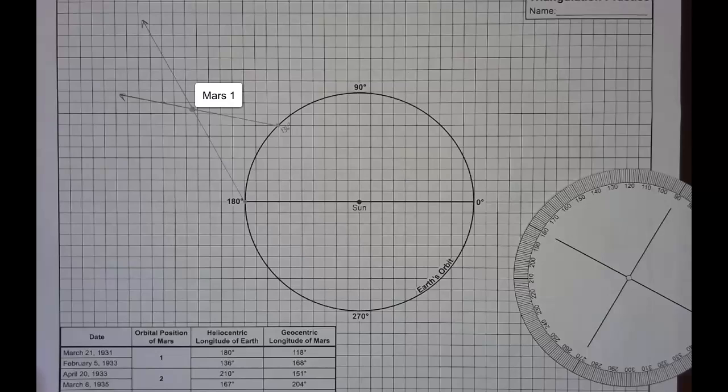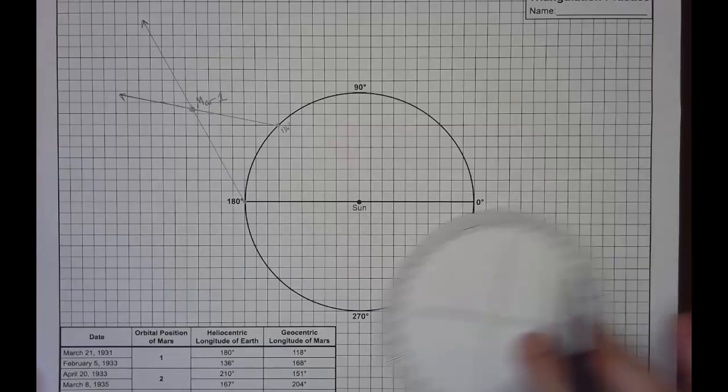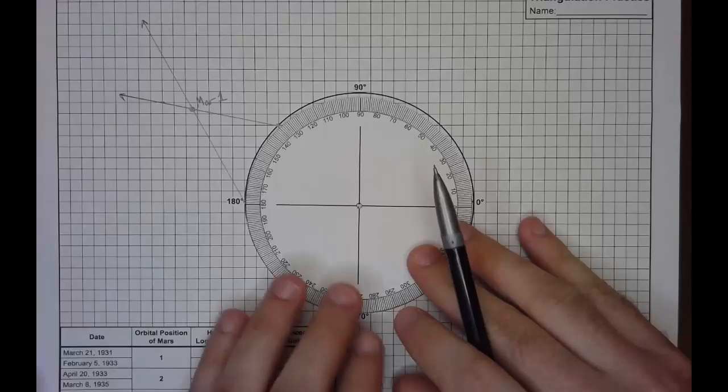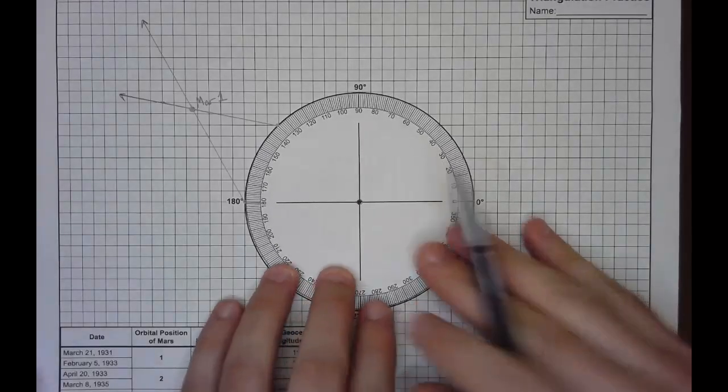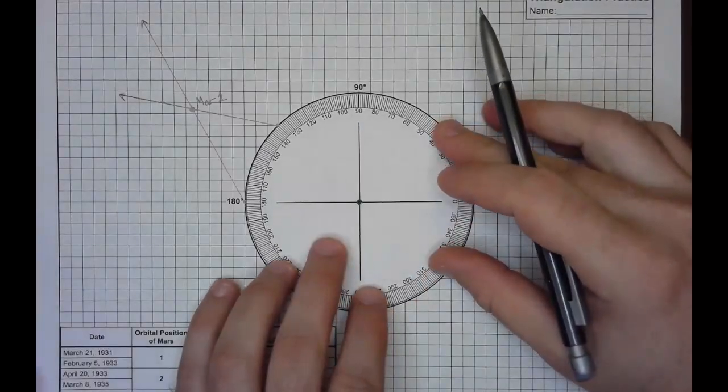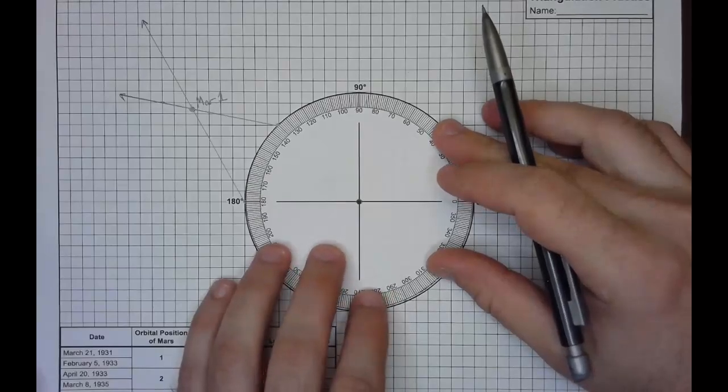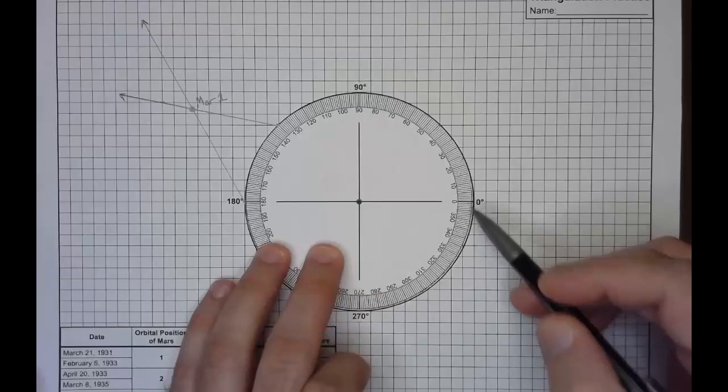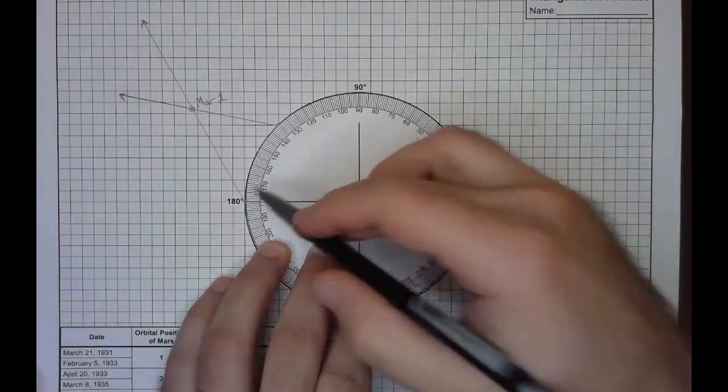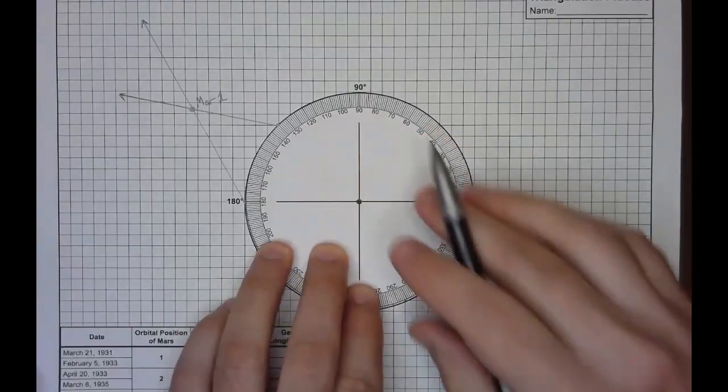So we'll go through that process one more time. I'll demonstrate it for orbital position 2. Again, we always start with the heliocentric longitude of Earth in its orbit. So you just want to orient your protractor, center it on the sun. Check to see that's at 0, 270, 90, 180. We're good to go.